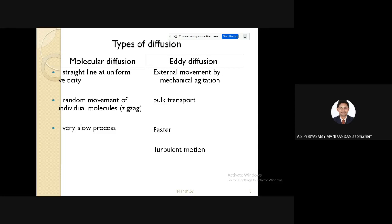There are two types of diffusion: one is molecular diffusion, another one is eddy diffusion. This molecular diffusion is a very slow process. It happens in a zigzag manner like random movement of individual molecules taking place. Whereas in eddy diffusion, it is a bulk transport that will be taking place due to the external force given either in terms of agitation or some blowers, fans we are using in order to increase this movement. This is the faster process and turbulent motion is involved.